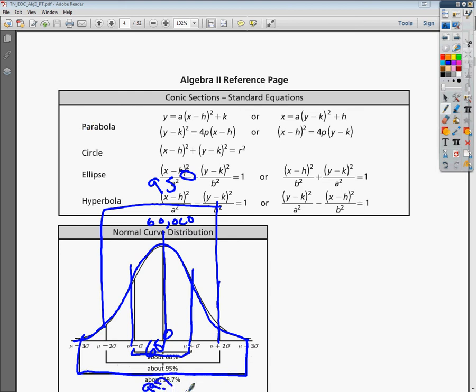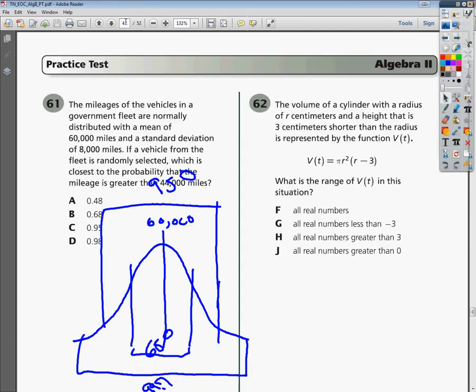Let's go back to our question and use this to figure out the answer. The mileages are distributed with a mean of 60,000 miles and standard deviation of 8,000, which means each time I go out to a line, I add or subtract 8,000 depending on direction. So I need to figure out where 44,000 miles actually is.